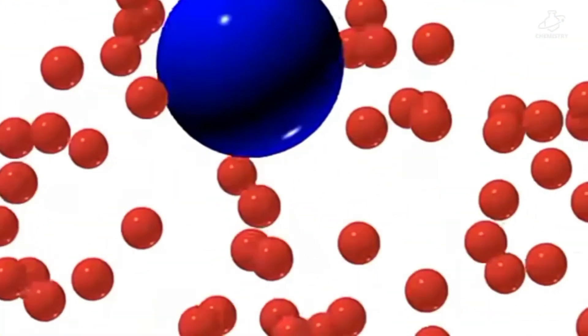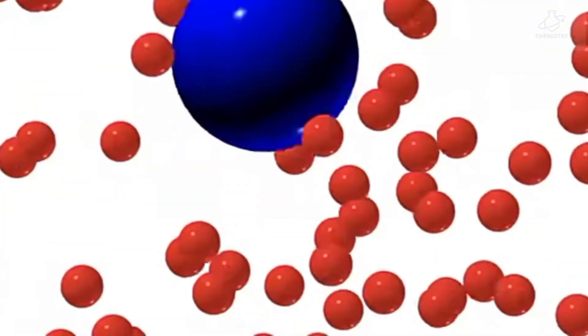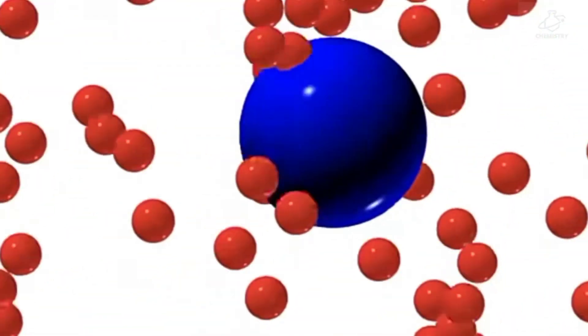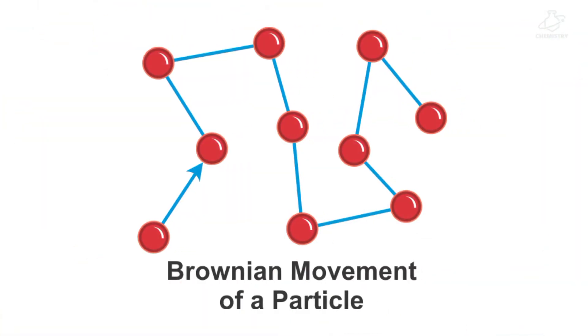If a drop of liquid with particles suspended in it is observed under a microscope, it is seen that the particles are not at rest but are moving in all directions in a zigzag motion. This motion is called Brownian movement, after the name of the scientist who observed it.